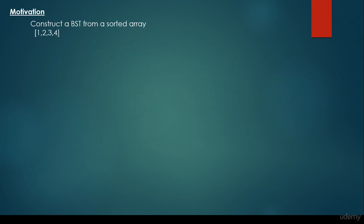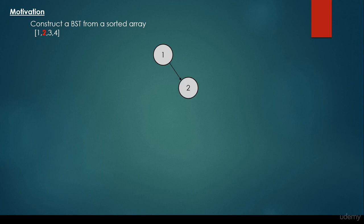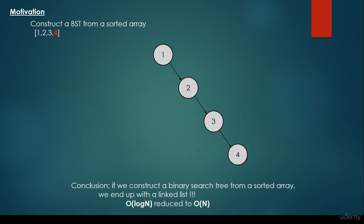So what's the problem with binary search trees? Let's consider the situation when we would like to construct the tree from a sorted array: 1, 2, 3, and 4. We consider 1 — it's going to be the root node. Then we insert 2; it's greater than the root node, so it's going to be the right child of node 1. Then node 3 — it is greater than the root and greater than vertex 2, so it's going to be the right child of 2. Then 4 is going to be the right child of 3. So as you can see, if we construct a binary search tree from a sorted array, we are going to end up with a linked list. The operations are then going to have O(n), so linear time complexity, instead of logarithmic time complexity.